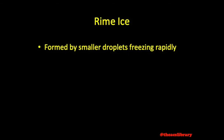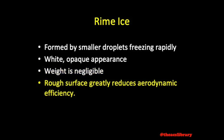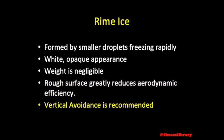Rime ice is formed by smaller droplets freezing rapidly before having time to spread. It has a white, opaque appearance. The weight of rime ice is relatively negligible, as it is so light. The danger of rime ice, instead, lies in its rough surface, greatly reducing the aerodynamic efficiency of the aircraft. Rime ice is more easily removed than clear ice. In terms of rime icing, vertical avoidance is recommended — climb or descend out of the icing zone.